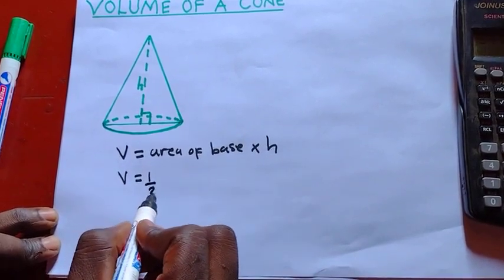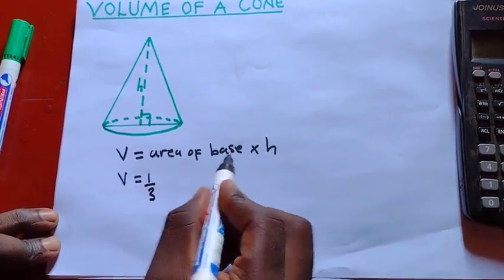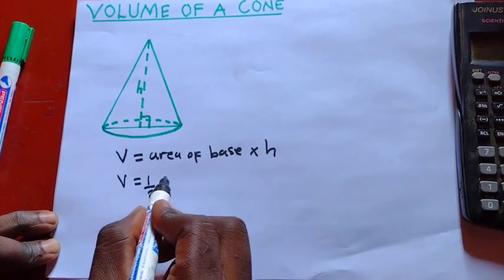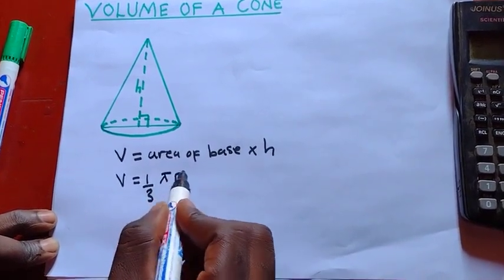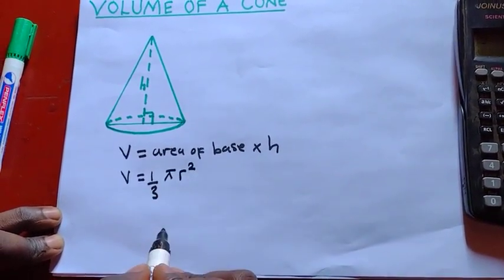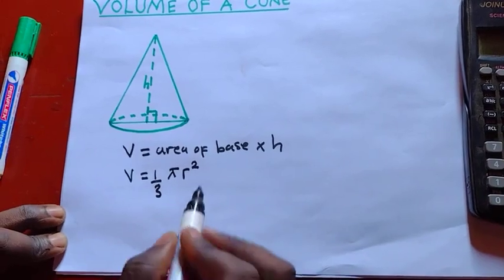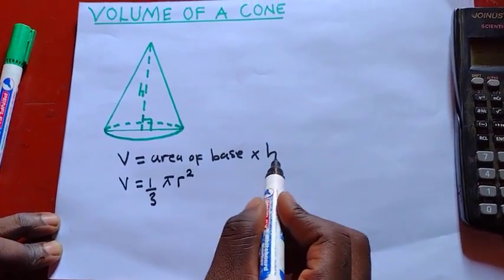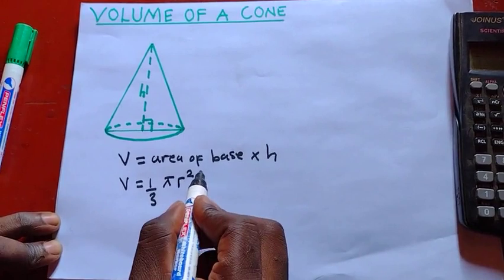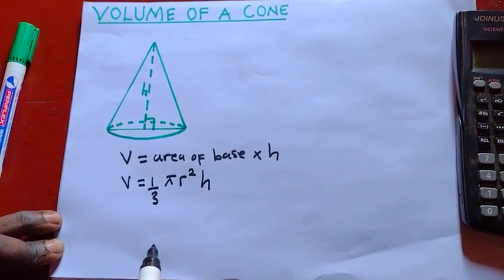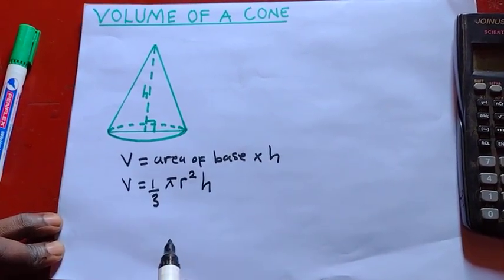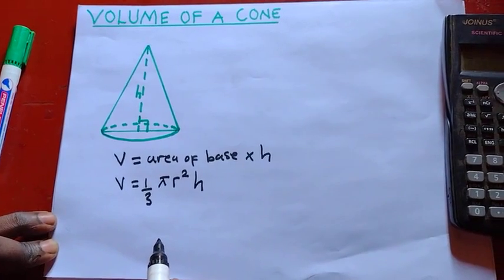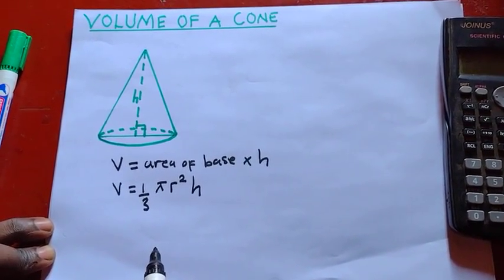So here we say 1 over 3, then times the area of base. So the area of base, or the formula of finding the area of the circle is π by r squared. Okay, so remember, this area of base was multiplied with what? Height there. So you put height.